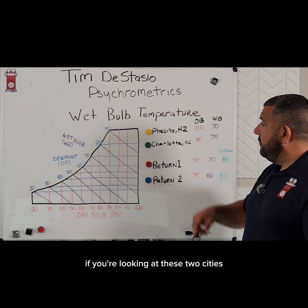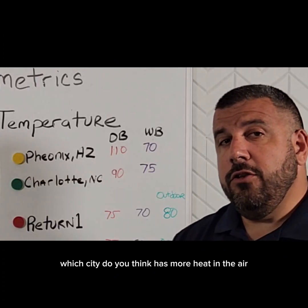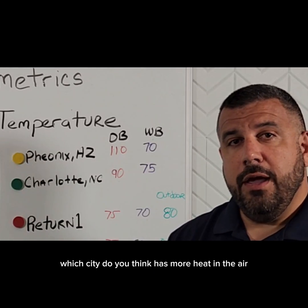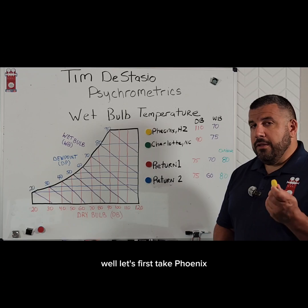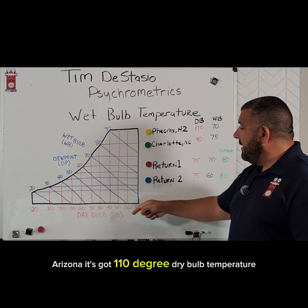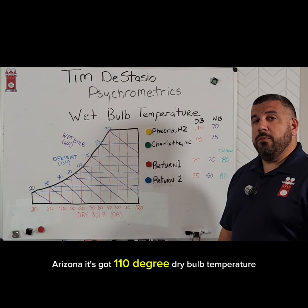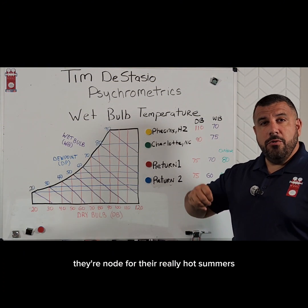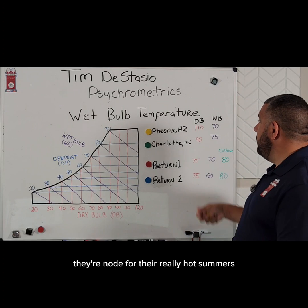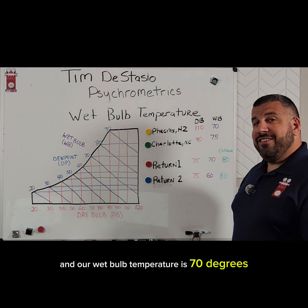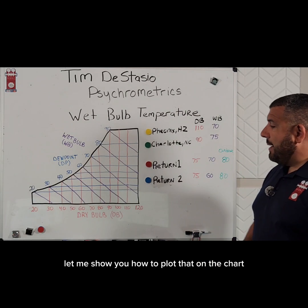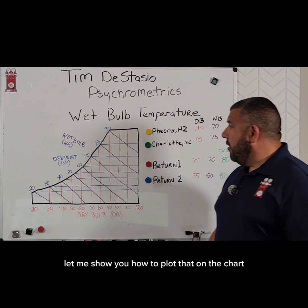If you're looking at these two cities, which city do you think has more heat in the air? Well, let's first take Phoenix, Arizona. It's got a 110-degree dry bulb temperature — they're known for their really hot summers — and our wet bulb temperature is 70 degrees. Let me show you how to plot that on the chart.